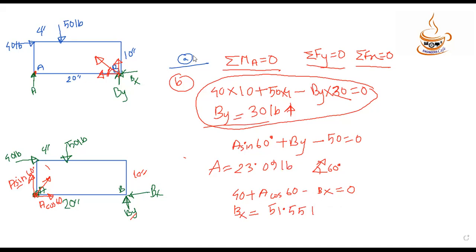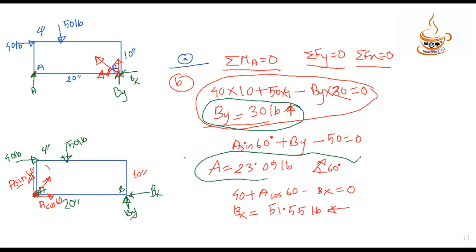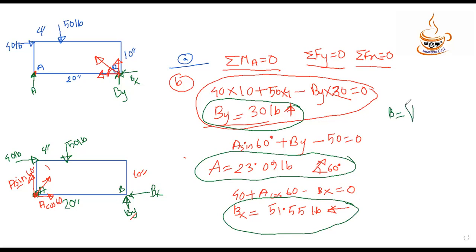To verify, we do a moment check and also find the resultant reaction. The resultant at B is found using the formula: resultant equals the square root of By-squared plus Bx-squared, which gives us 59.64 pounds.